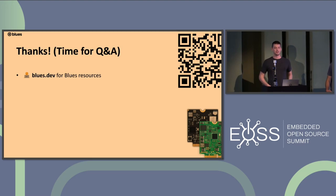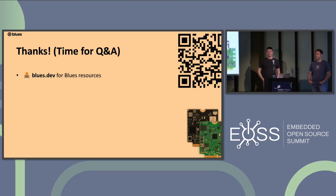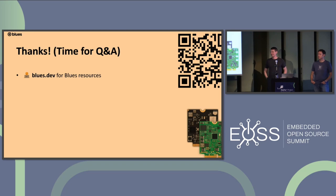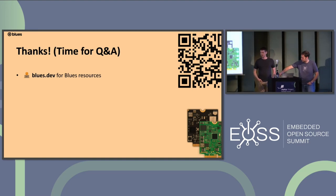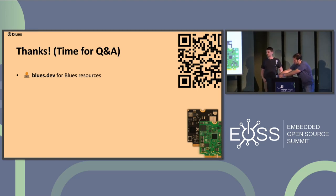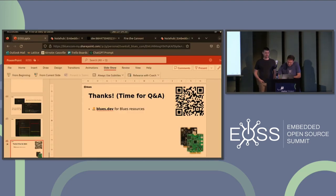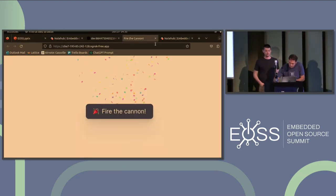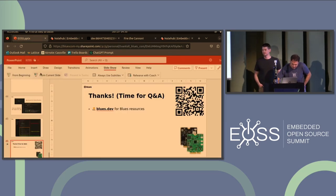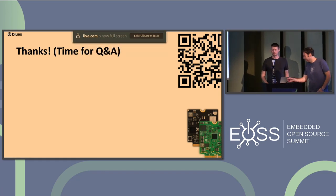Audience question: Is it possible for your device to send data directly to your own cloud or server without going through Notehub? The answer is no — the Notecard is programmed to connect directly to Notehub, partially for security reasons since we communicate off the public internet via a VPN directly to Notehub. Notehub is then a proxy you can route data from.